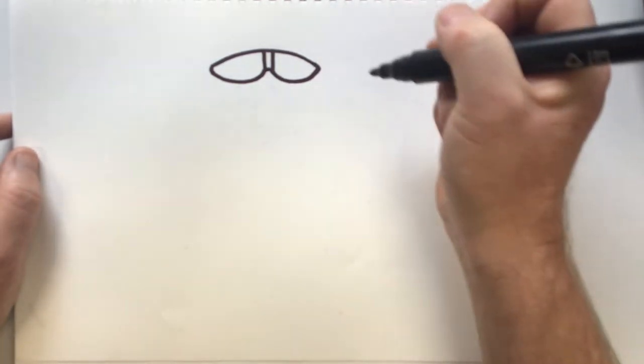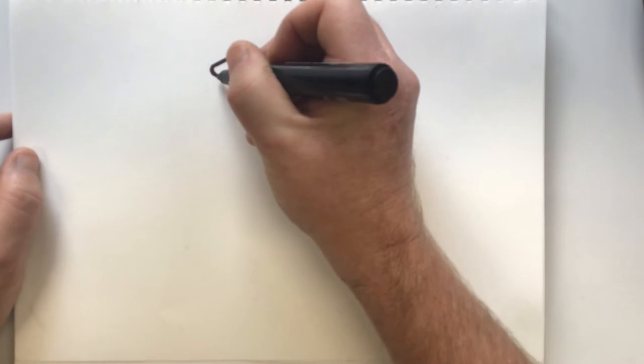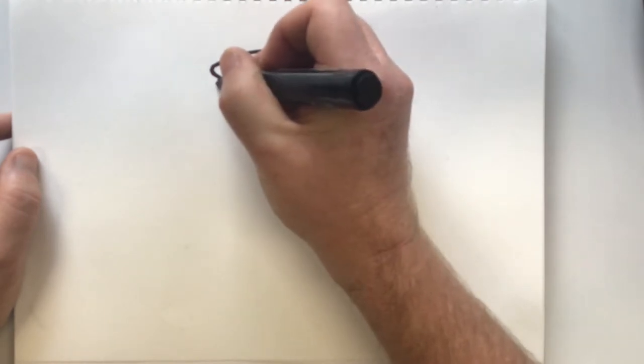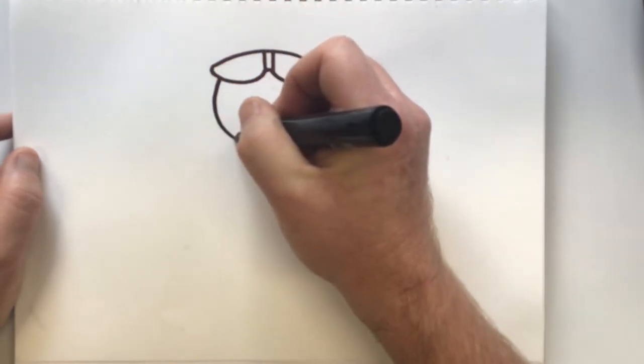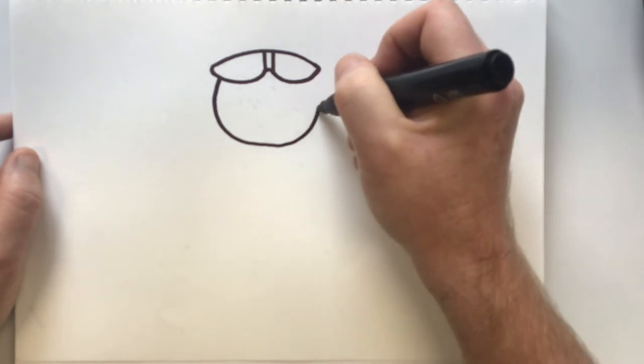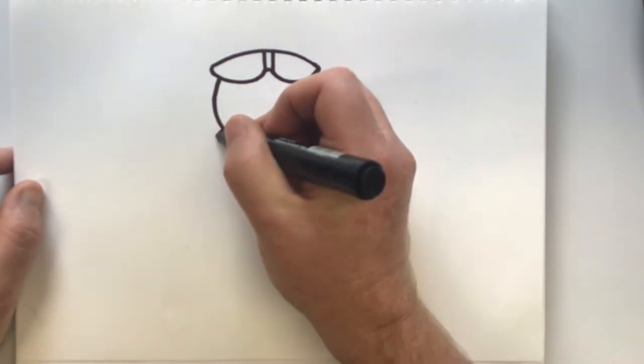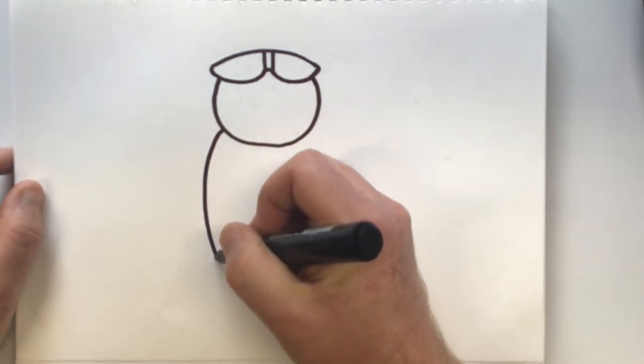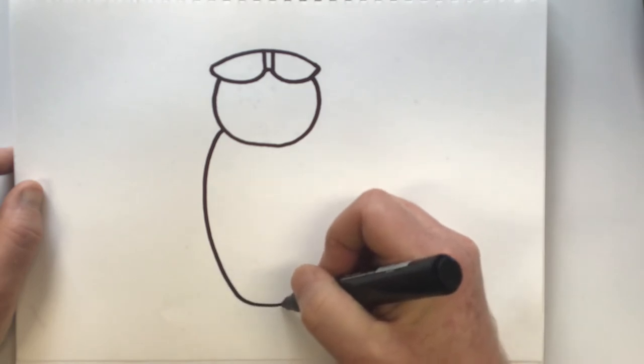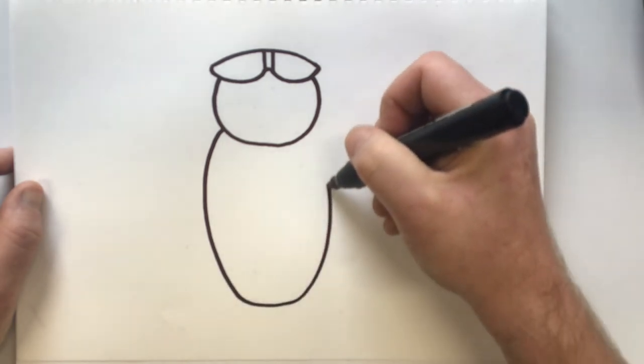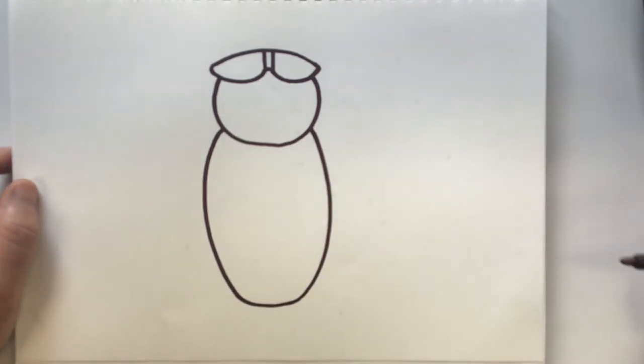I'm just going to join those lines up with a little line. Now I'm going to draw a big U shape to join from this side around to this side. Next I'm going to do another big U shape like this to make his body.